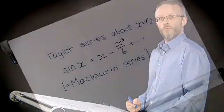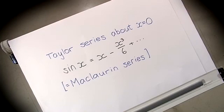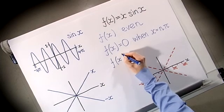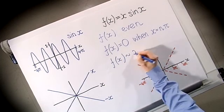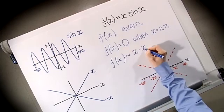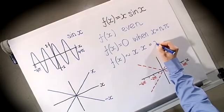Before I sketch the graph there's one more detail I want to look at: what happens when x is small. To examine this we're going to use the Taylor series for sin(x) about x = 0, also known as the Maclaurin series. When x is small, f(x) is roughly x times x, because x is the first term in the Taylor series for sin(x). And that's just x².